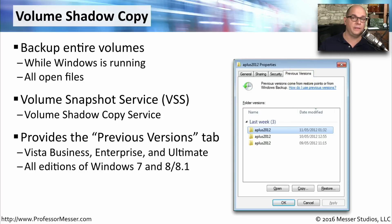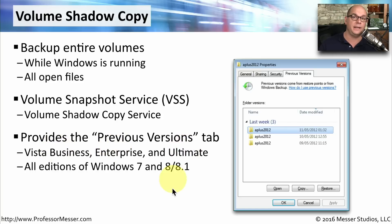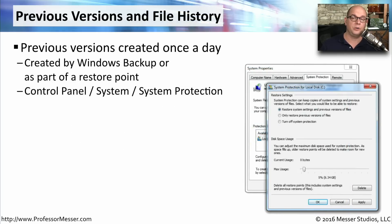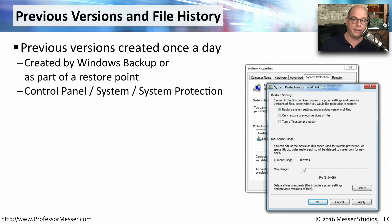You can find the Previous Versions tab inside the properties of the file or folder you're working with. This previous version functionality is available in Vista Business, Vista Enterprise, and Vista Ultimate, and in all editions of Windows 7 and Windows 8. At a minimum, these previous versions are created once a day. They can also be created through a Windows backup process, a restore point, or when you install an application. You'll find details of what's created and how much room is used under Control Panel, System, System Protection.